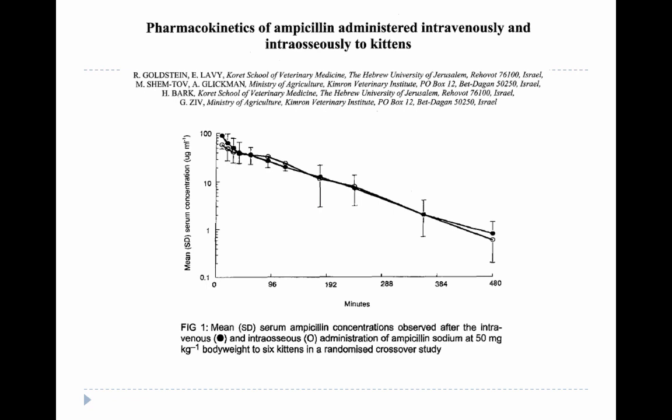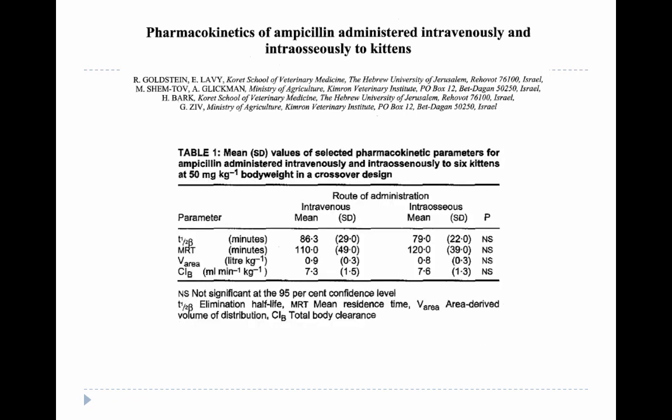Looking at pharmacokinetics of ampicillin given IV or IO to kittens: the volume of distribution in a kitten is much larger than in an adult — 0.9 L/kg in kittens (greater than total body water) versus 0.167 L/kg in adults — resulting in lower plasma concentrations of ampicillin in kittens. This is why the general recommendation to reduce drug dosages in young animals across the board is not necessarily appropriate for ampicillin or certain other water-soluble drugs.